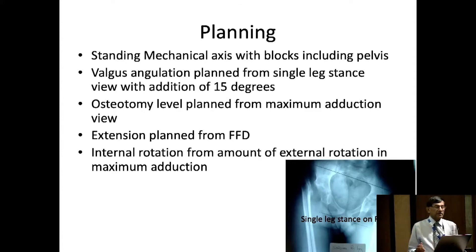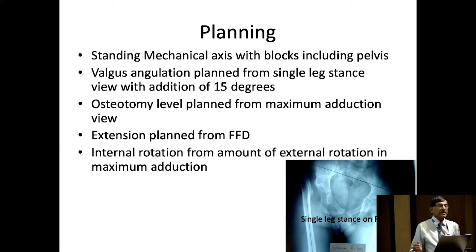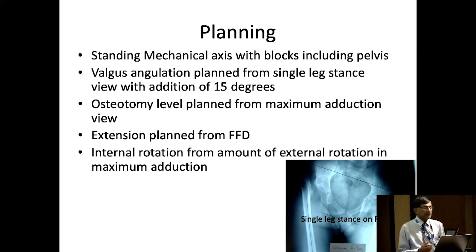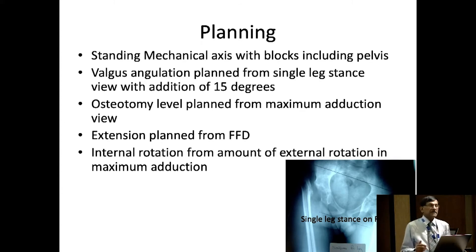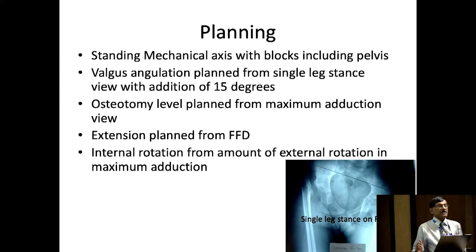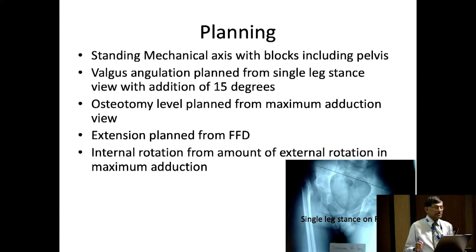Planning is based on a variety of things apart from your clinical examination. You do standing mechanical axis blocks including the pelvis, but most importantly, if there is free adduction, we always do a single leg stance X-ray — you can calculate the adduction angle there and see how much has to be corrected and add the valgus. The osteotomy level is planned from the maximum adduction view at the site of the ischium. The extension osteotomy — generally where they are hypermobile — I add about 20 degrees, but if they have an FFD, I release everything or resect the head and then decide. At all times, you have to keep the limb more in internal rotation because irrespective they tend to externally rotate.